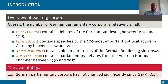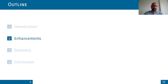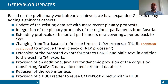For this reason we enhanced and updated our GAEPA Core. We updated our recent plenary protocols and also integrated the regional parliaments from Austria, and extended our historical parliaments back to 1797. We also changed our NLP pre-processing tool to the Docker Unified UIMA Interface (DUUI) for improved efficiency. We are now quicker and have more export formats like CoNLL and plaintext besides the existing XMI exports, and we also provide a Java API for dynamic data provision.